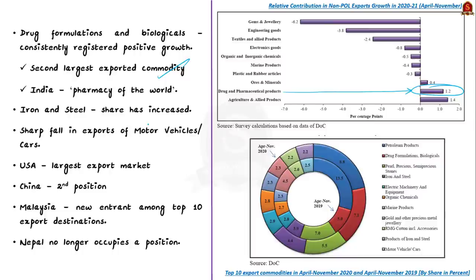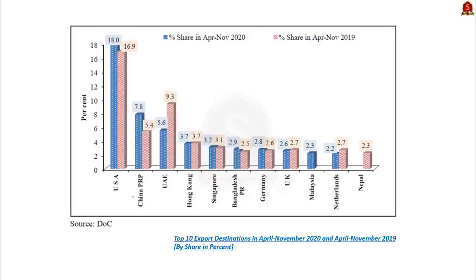Regarding important export destinations, USA continues to be the largest export market for India in the April-November 2020 period. China has occupied the second position in the same period. Malaysia has entered into the top 10 export destinations of India, whereas Nepal is no longer among the top 10 export destinations. These are crucial data from the exam perspective.